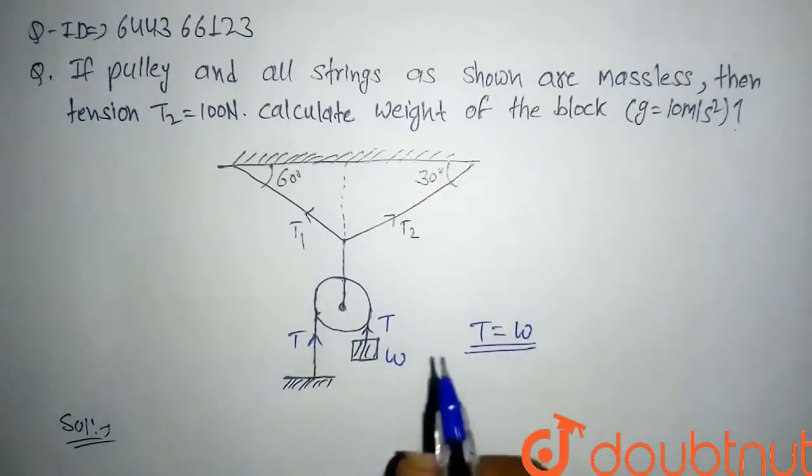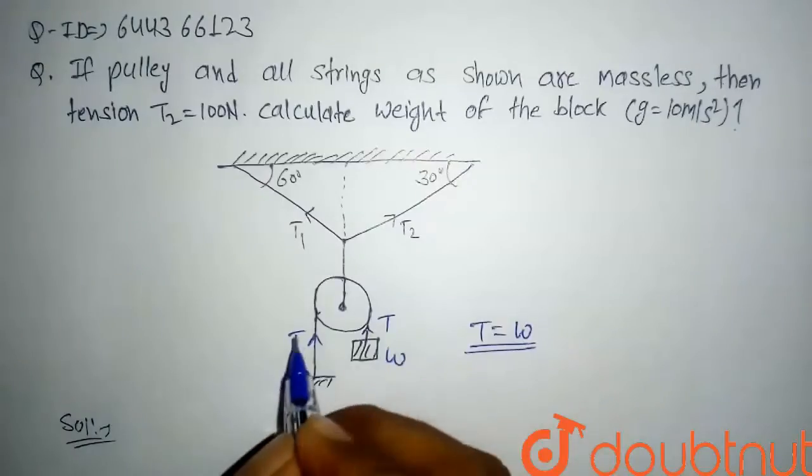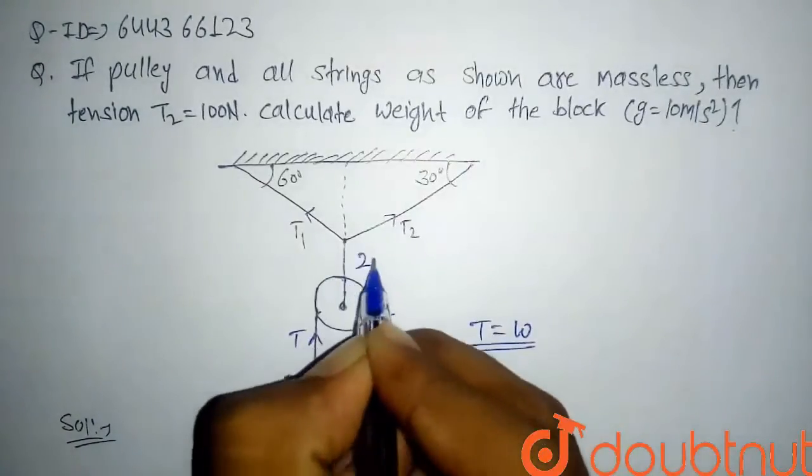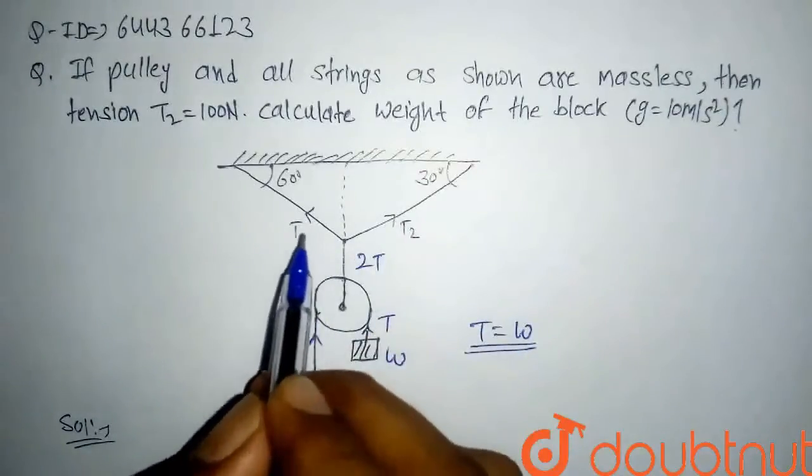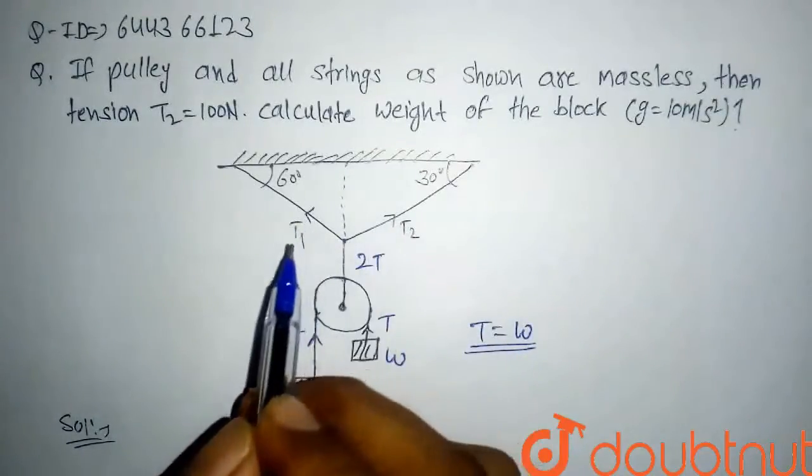They were to block, so this is T, this is T, so it will be 2T. Now we will take components horizontal and vertical of these two tensions T1 and T2 and get the answer.